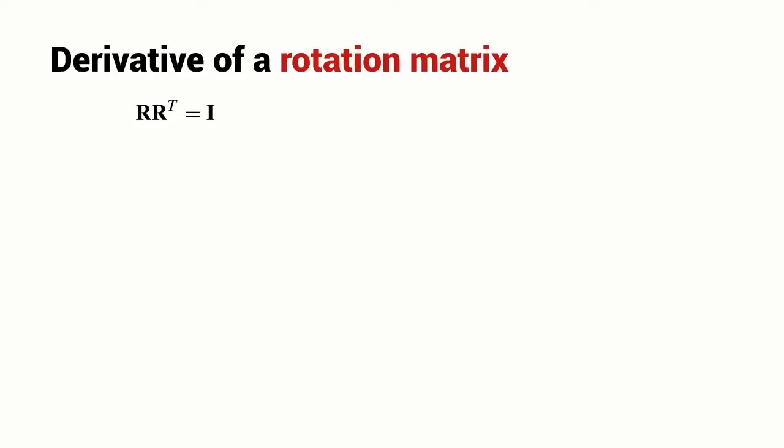In this section, we're going to look at computing the derivative of an orthogonal rotation matrix. One of the properties of an orthogonal matrix is that its inverse is equal to its transpose. So we can write this simple relationship: R times its transpose must be equal to the identity matrix.